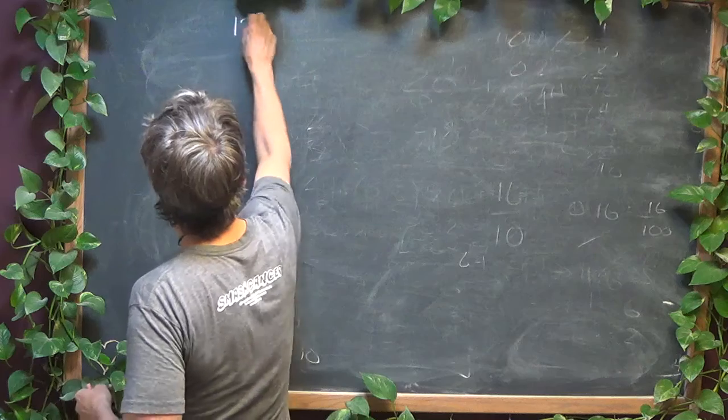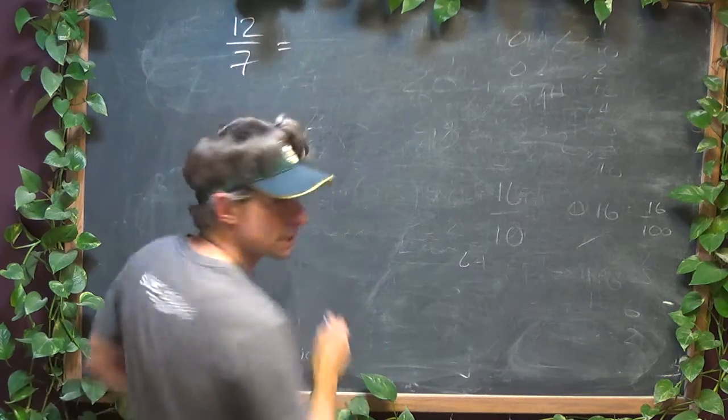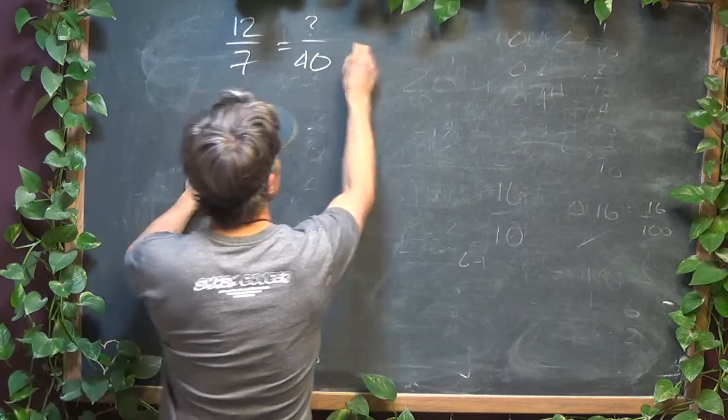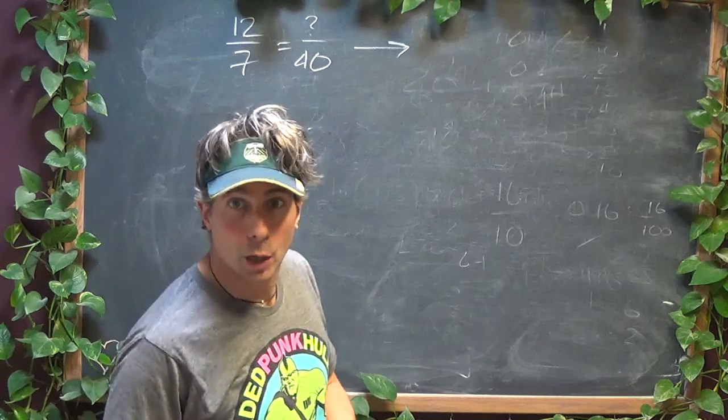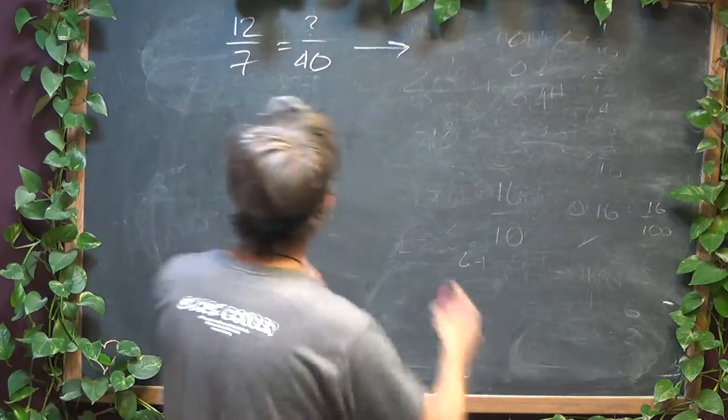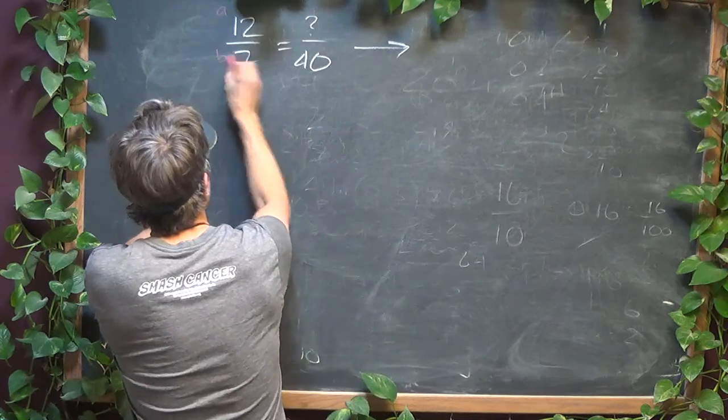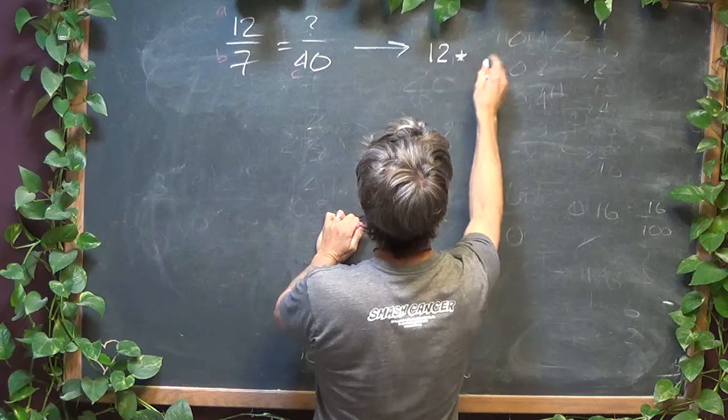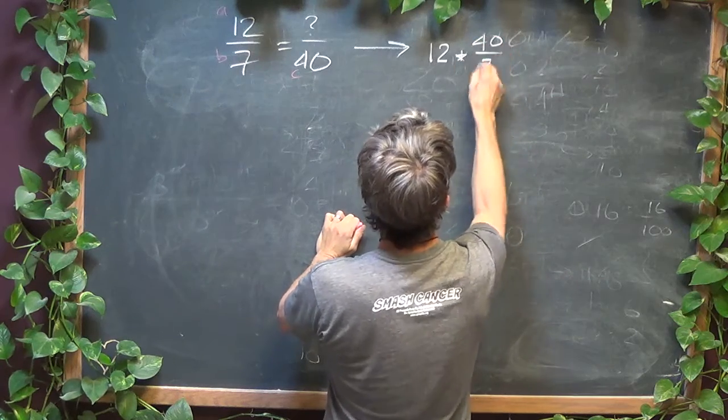So the first one, you got 12 sevenths equals something fortieths. All right. So using our ABCs, we discovered that that was 12 times 40 over 7.